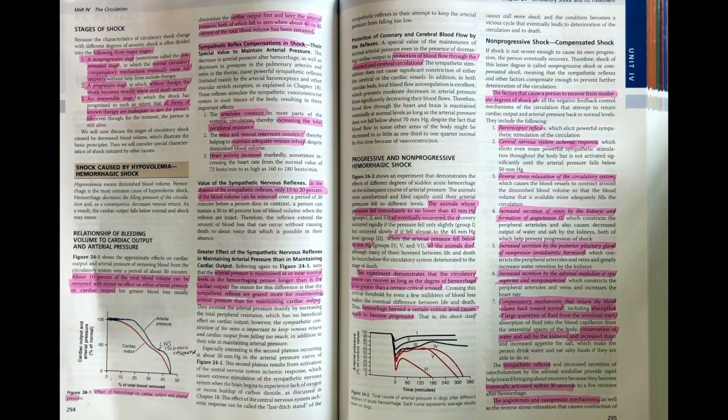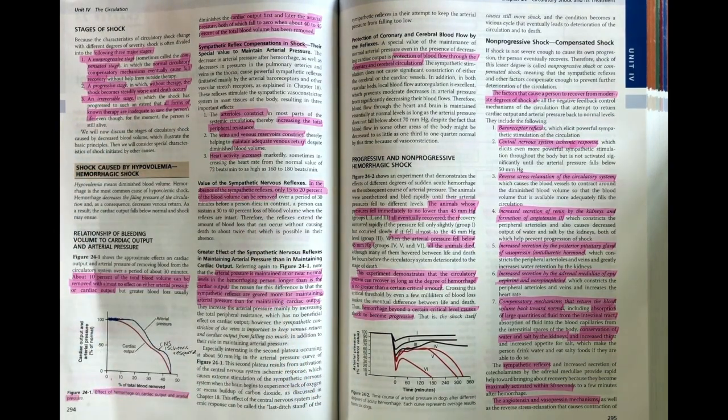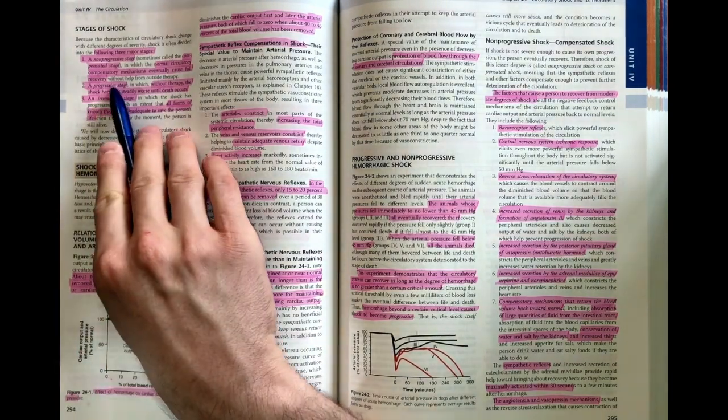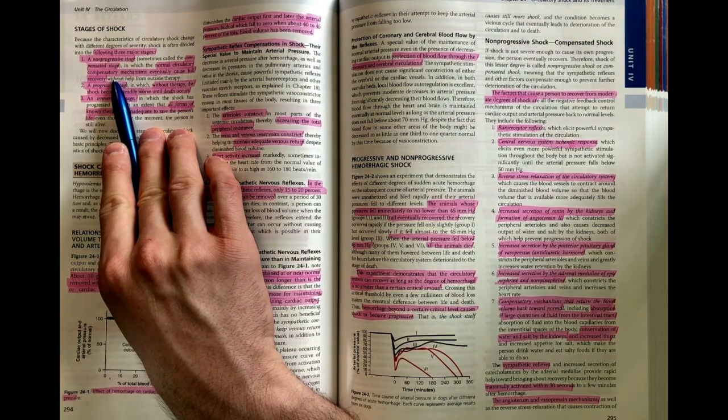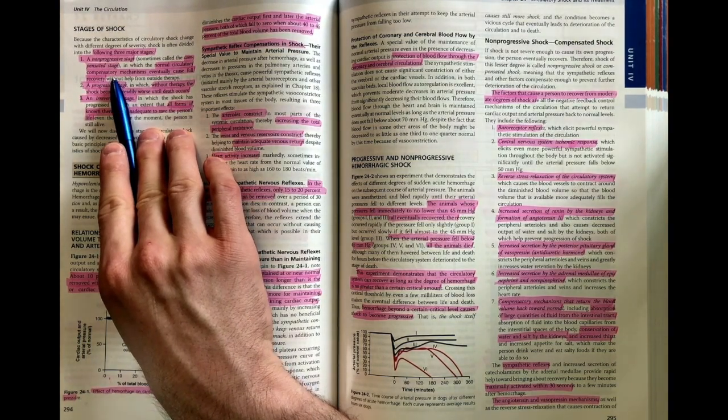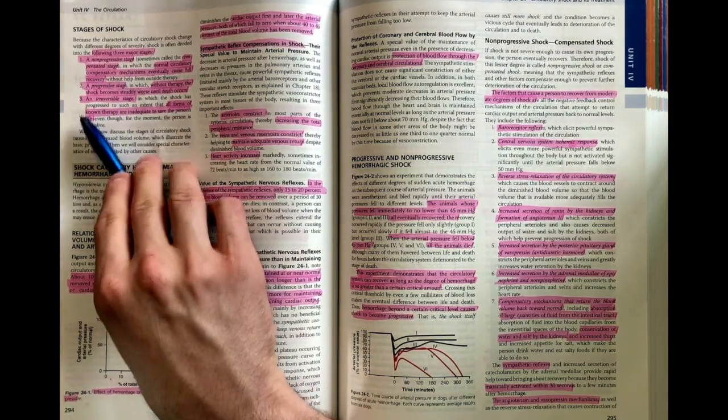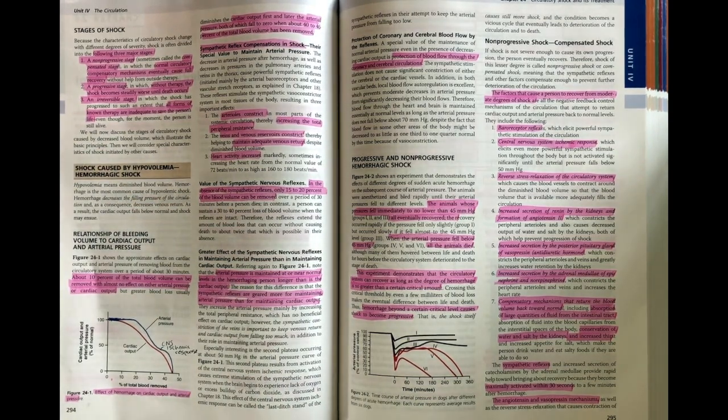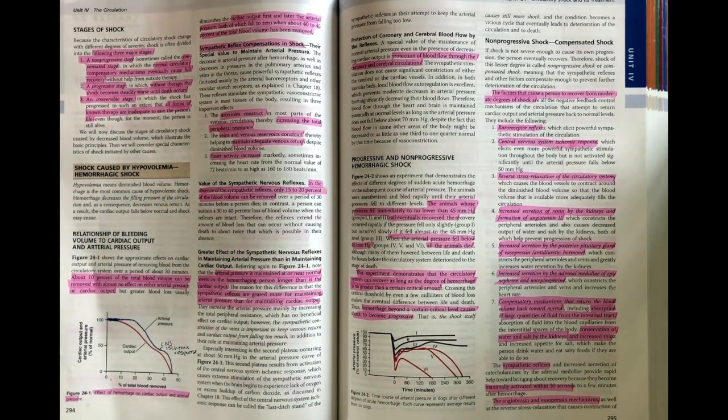There are three stages to shock. Number one is the non-progressive stage, which basically means that the shock can be corrected by the body's own compensatory mechanisms. The body itself is able to correct the shock and maintain normal perfusion and then recover.